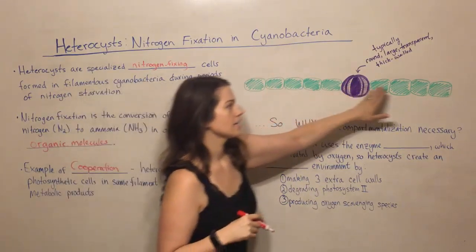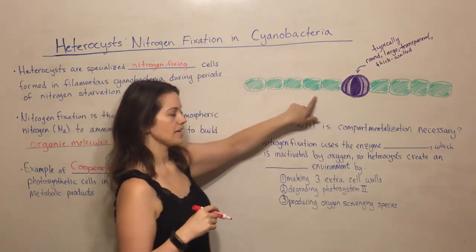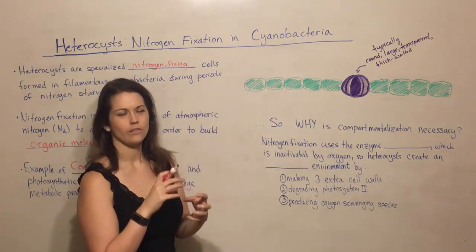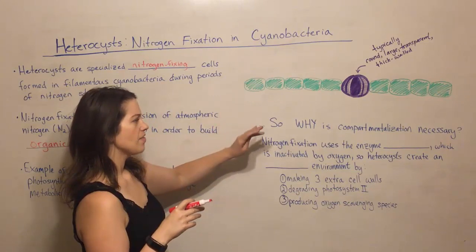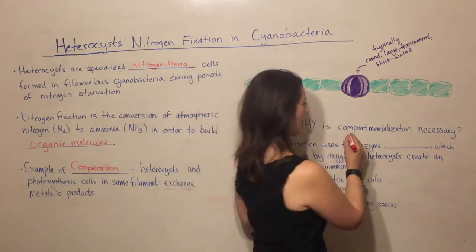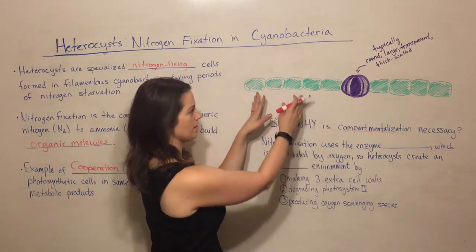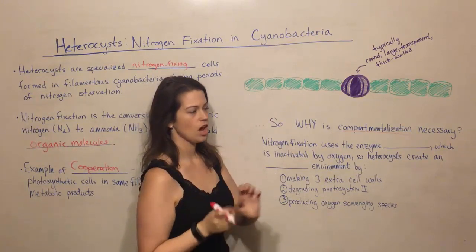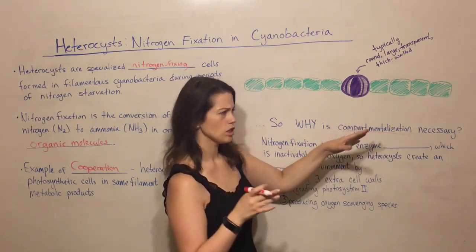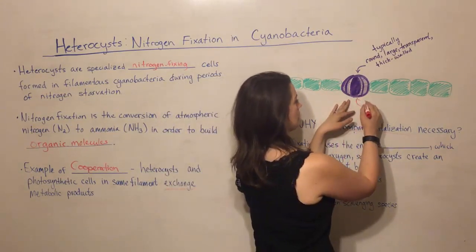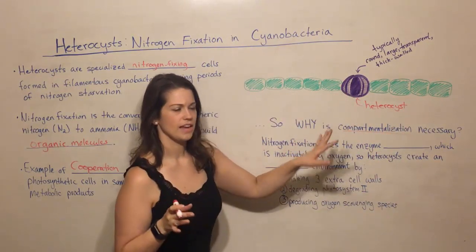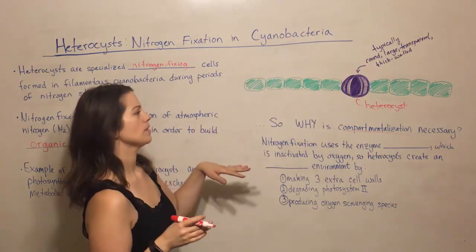This whole structure is a filamentous cyanobacterium — each one of these is a different cell. They are individual bacterial cells, but they are physically connected and can share with each other. They have a strategy of compartmentalizing this process: photosynthesis is happening in the green cells, not nitrogen fixation; nitrogen fixation is happening in the purple one, not photosynthesis. This purple cell right here is the heterocyst. Of course, it's not actually purple in real life — that's just to distinguish it from the photosynthetic cells drawn on the board.